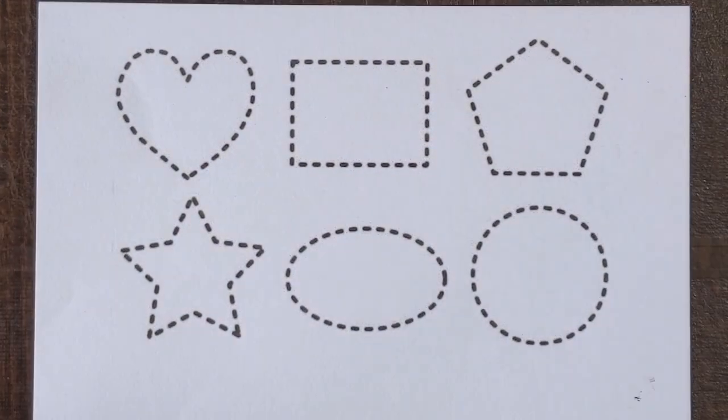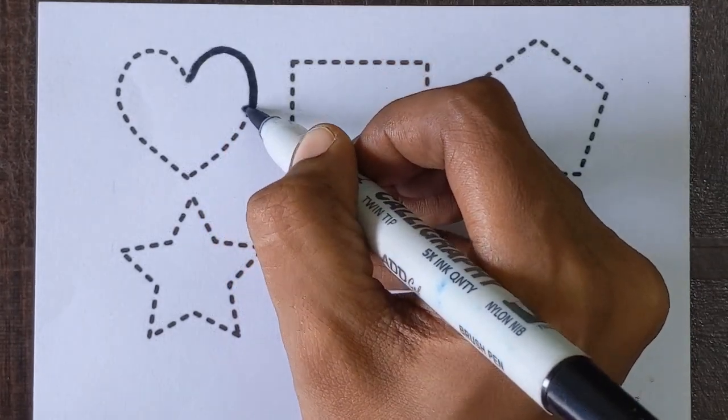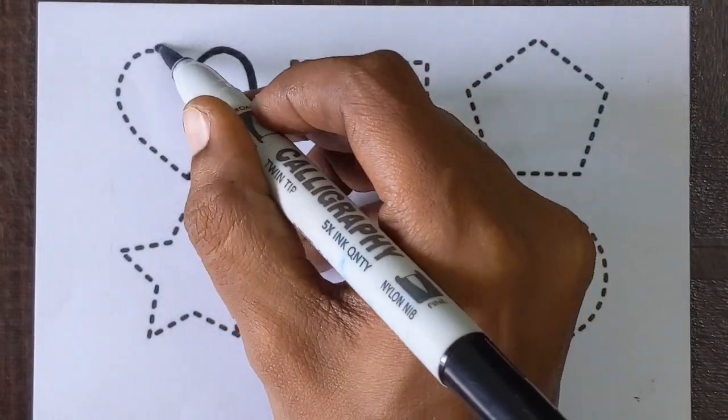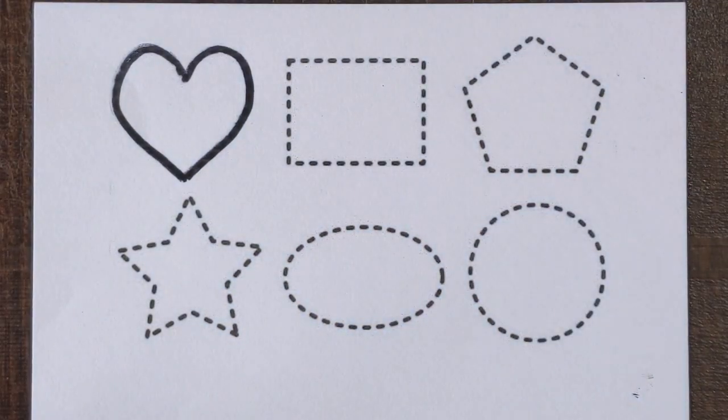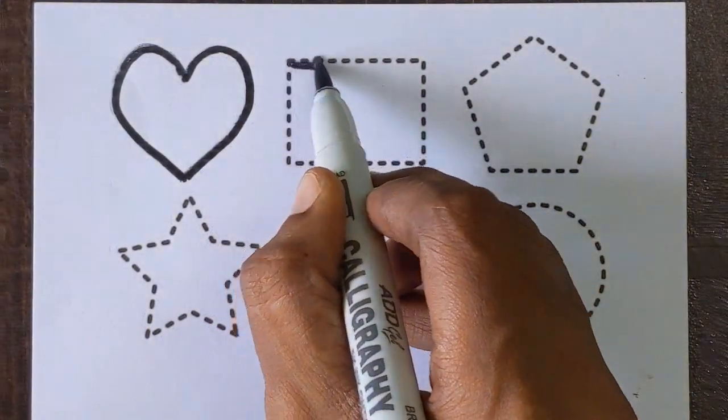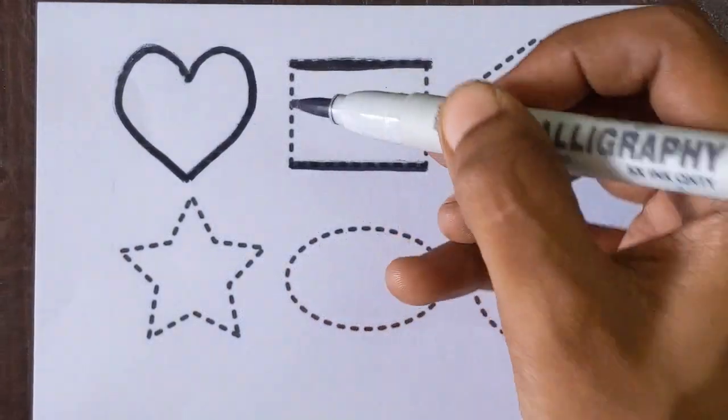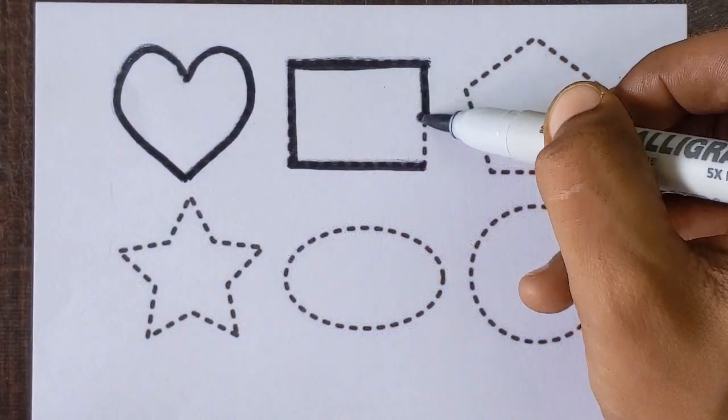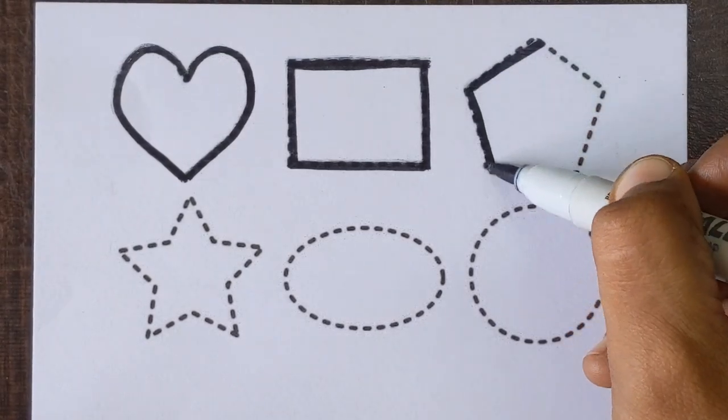Let's get started. At first we will draw the shapes just by following the dots. This is heart shape, rectangle, pentagon.